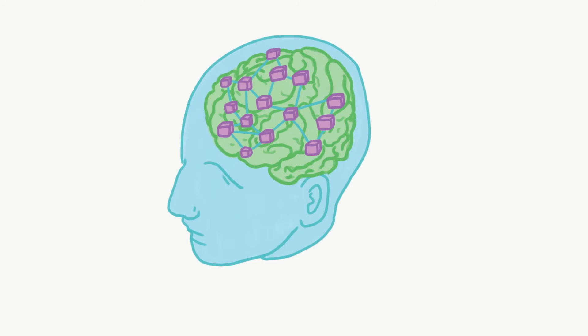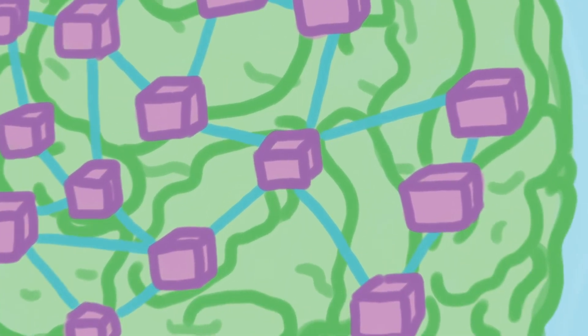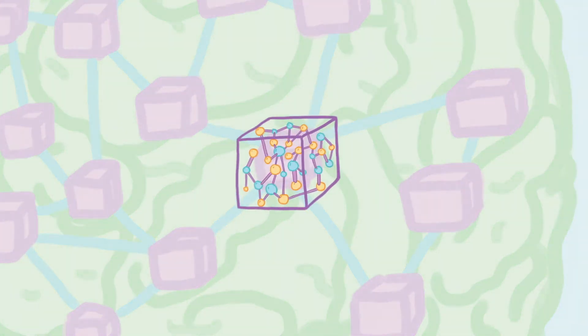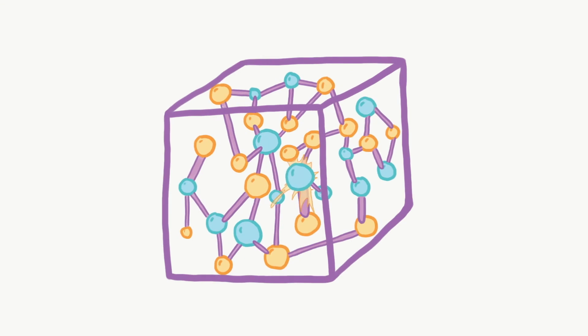TVB simulates on the macroscopic scale of brain regions. Nest, on the other hand, simulates on the mesoscopic scale of small neural populations or the microscopic scale of individual neurons.